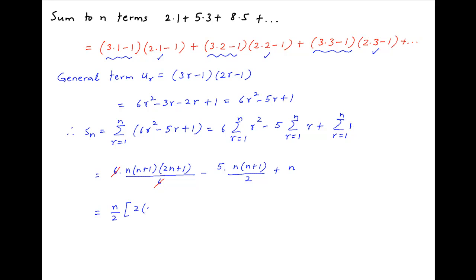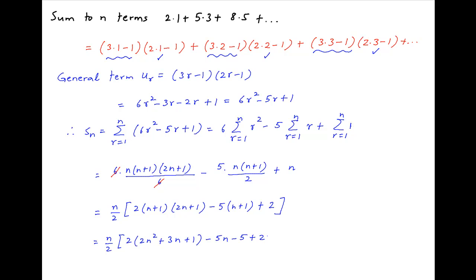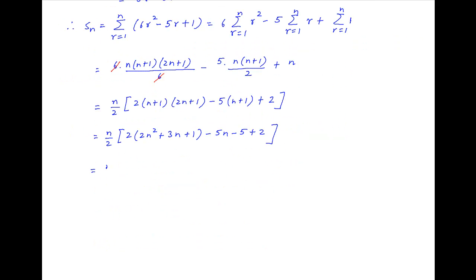Taking n/2 as common, we get n/2 multiplied by [2(n+1)(2n+1) − 5(n+1) + 2], which equals n/2 times [2(2n²+3n+1) − 5n − 5 + 2], and therefore Sₙ equals n/2 times (4n²+6n+2−5n−3), which equals n/2 times (4n²+n−1).